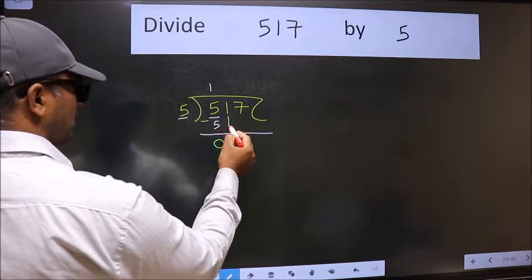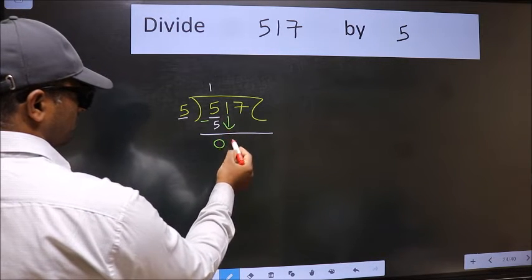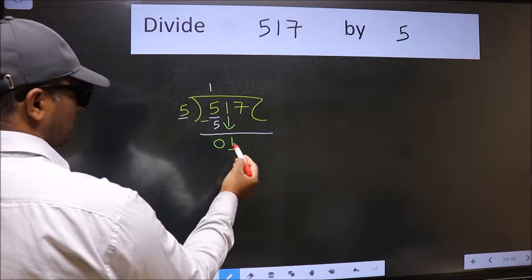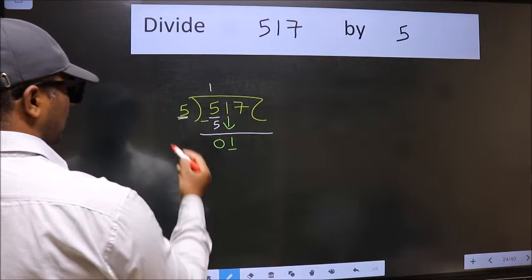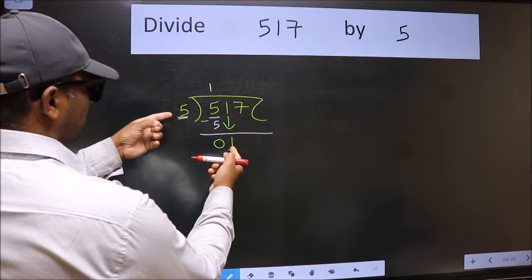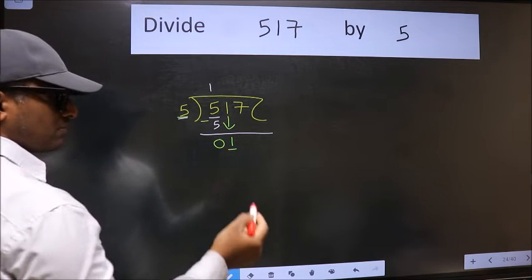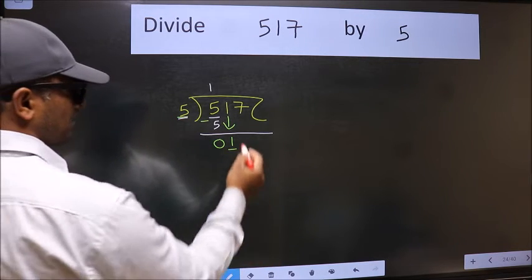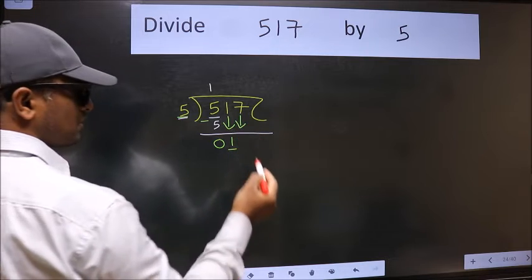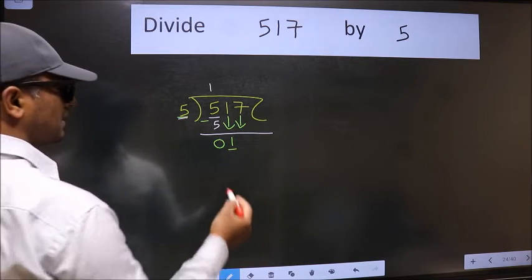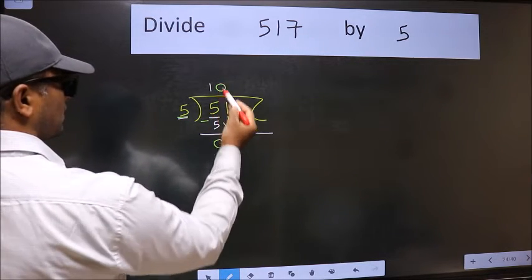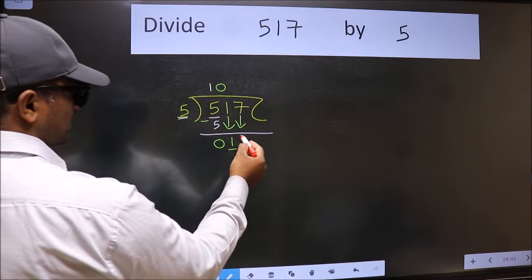After this, bring down the beside number. So 1 down. Now here we have 1 and here 5. 1 is smaller than 5, so we should bring down the second number. And the rule to bring down the second number is we should put 0 here. Then only we can bring this number down.